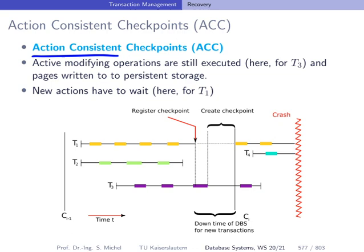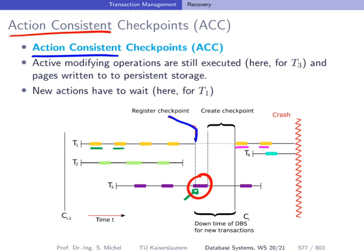Action-consistent checkpoints look not at entire transactions but at individual modification operations within transactions. At the time we register a checkpoint, the system waits for individual modifying operations that have just started to be completed, while blocking all additional actions not yet started. For instance, transaction one still has actions to execute, but they get postponed after the checkpoint creation. We wait only for the in-progress action to complete — hence the name action-consistent — unlike transaction-consistent, where we waited for the entire transaction.